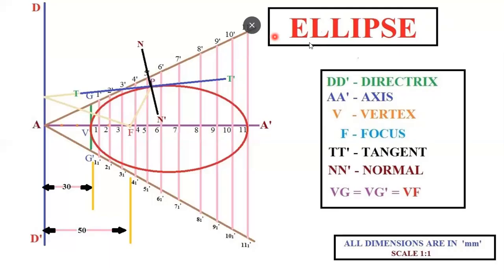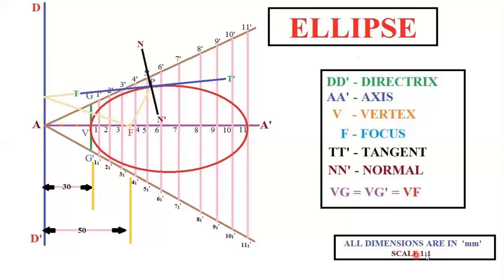Write the subheadings: DD' is directrix, AA' is axis, V is vertex, F is focus, TT' is tangent, NN' is normal, VG = VG' = VF. These are called subheadings and the text height should be 7 mm. The main heading 'ELLIPSE' should be 10 mm, subheadings 7 mm, and all dimensions and scale notes (e.g., 'All dimensions are in mm, Scale 1:1') should be 5 mm. Write the scale note at the bottom of the page.